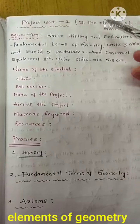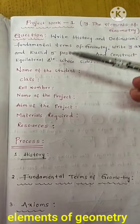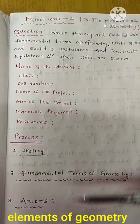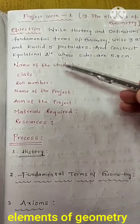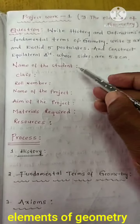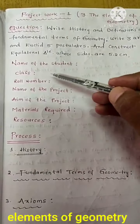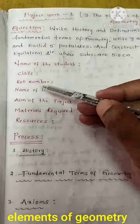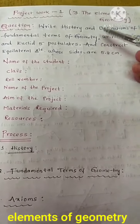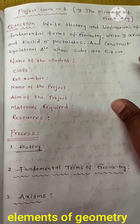See how to process. In the fresh notebook, write this question as it is. The steps are: first, the name of the student, then your class, then your roll number. The name of the project is 'The Elements of Geometry'.